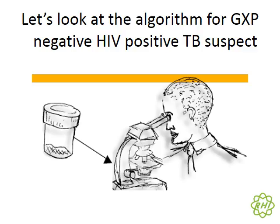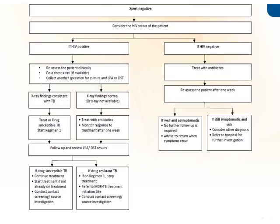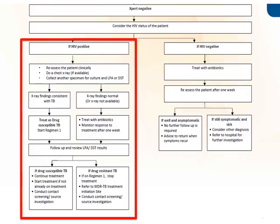Let us look at the algorithm for GeneXpert-negative HIV-positive TB suspects. These are just for our GeneXpert-negative patients. As soon as somebody is GeneXpert negative, we need to know their HIV status to assess these patients best. If the patient is HIV negative, we're not too worried — we treat with antibiotics and look for other causes for their cough. But if the patient is HIV positive, we remain very suspicious for TB and there is a very set approach.